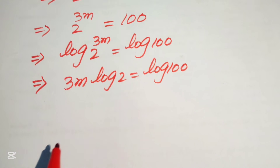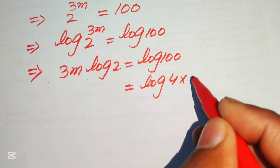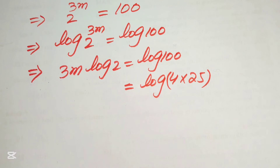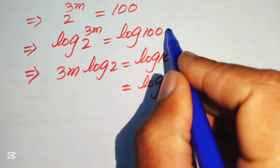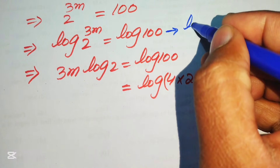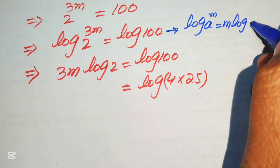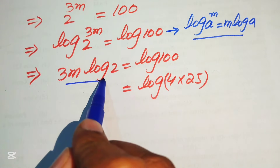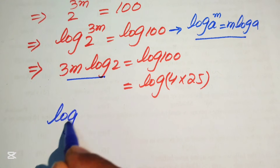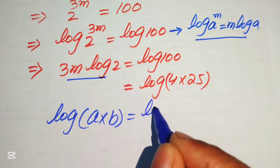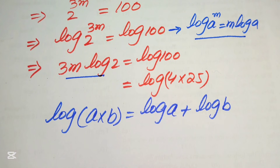We focus on the right-hand side: log of 100. We write 100 as 4 times 25. Then we apply the log product property — log of a times b equals log of a plus log of b — to separate this into two terms.